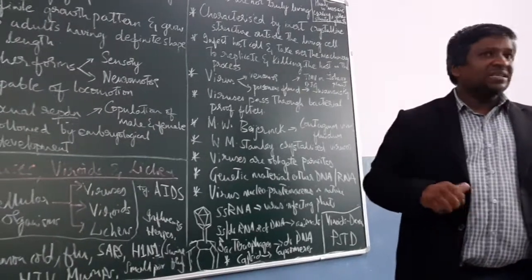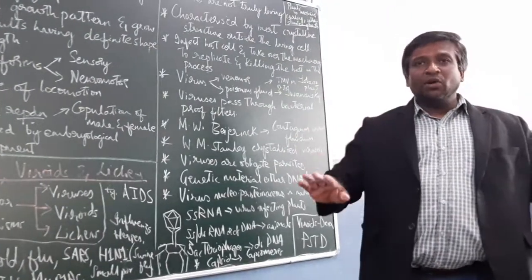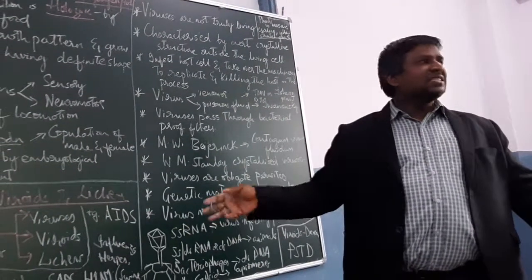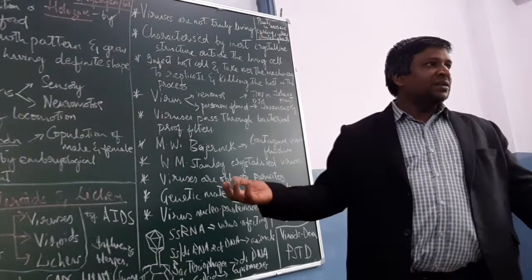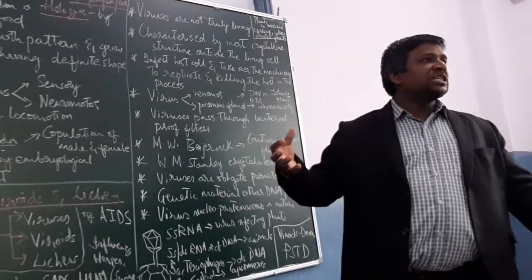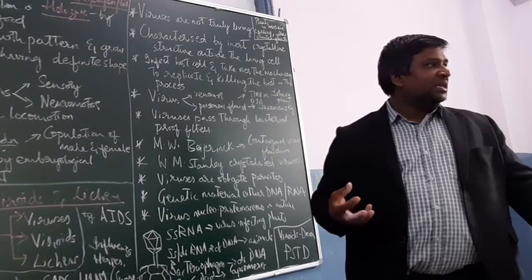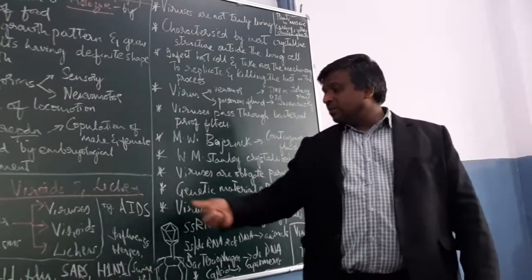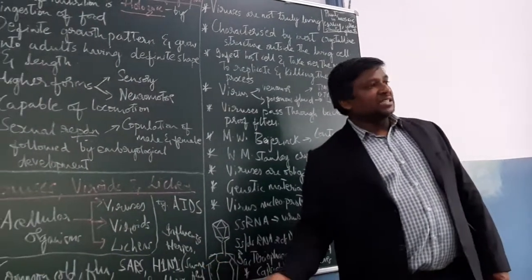These are general characters we are discussing. Now the next thing we will proceed is viruses. Viruses are acellular. Lichens are also acellular organisms. That is the reason there is no description in Whittaker's five-kingdom classification.